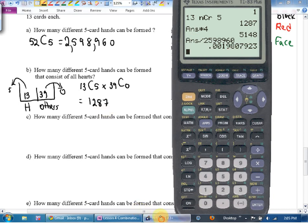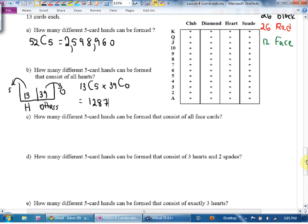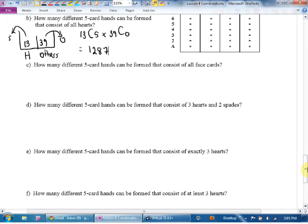C. How many different five-card hands can be formed that consist of all face cards? Bucket. Face cards and others. How many face cards are in the deck? Twelve. How many others are in the deck? Do the arithmetic. Forty. How many face cards do we want? It says all, so five. How many others do we want, then? Zero. What's the equation? Twelve choose five times forty choose zero. Which is really just twelve choose five.